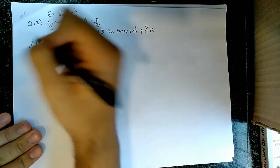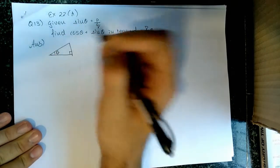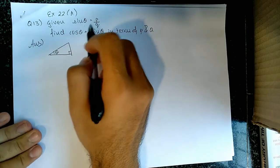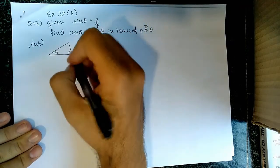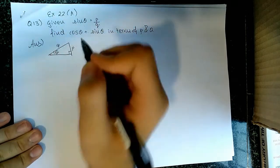To solve this, we first draw a right-angled triangle with an angle theta. Using the formula sin theta equal to perpendicular upon hypotenuse, we can deduce that the perpendicular from theta is p and the hypotenuse is q.